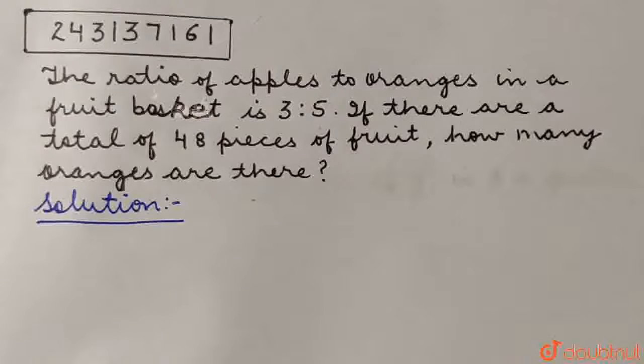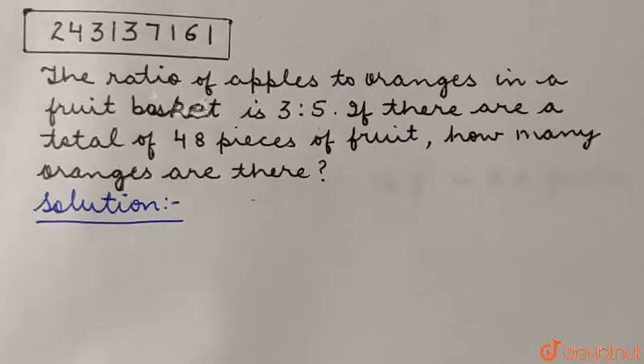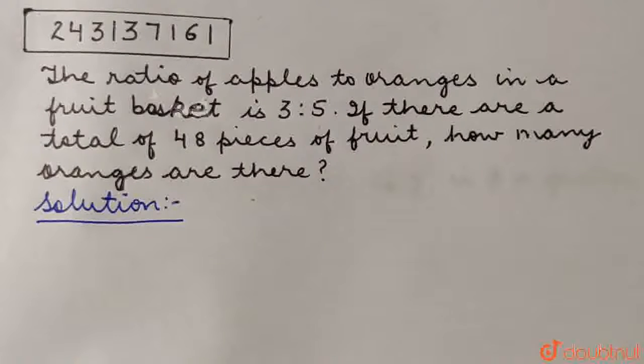The ratio of apples to oranges in a fruit basket is 3 is to 5. If there are a total of 48 pieces of fruit, how many oranges are there?